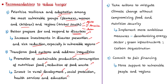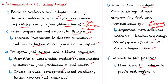The fourth recommendation is to mitigate climate change without compromising food and nutrition security, achieved by working toward the Paris Climate Agreement targets. High-income countries must implement ambitious measures like decarbonizing their energy sector, building green infrastructure, and boosting carbon sequestration. The fifth recommendation is to commit to fair financing — governments must increase financial support to the most vulnerable people and regions, with least developed countries receiving more priority in funding.